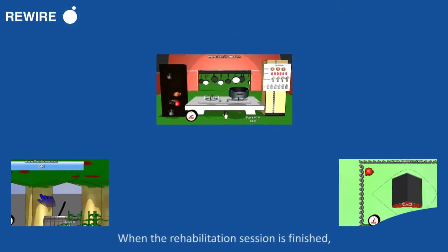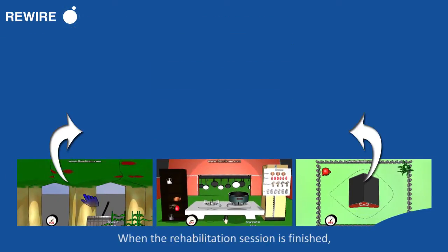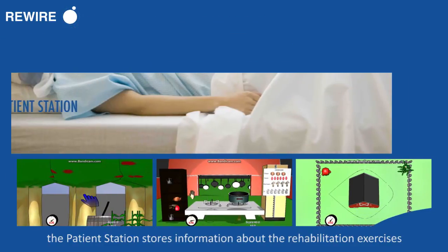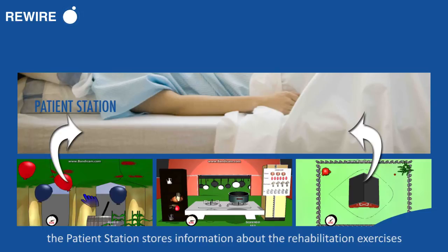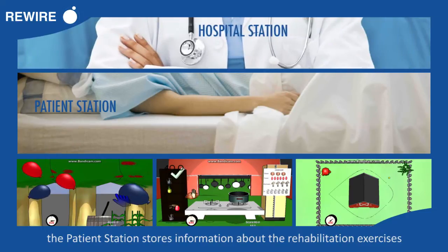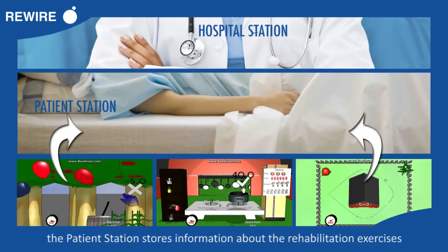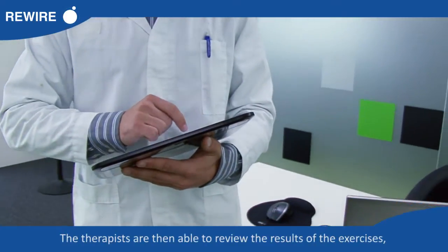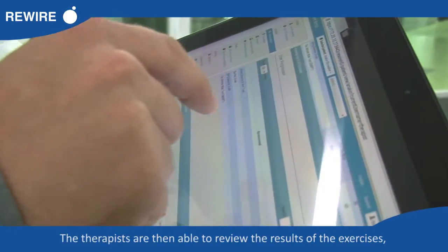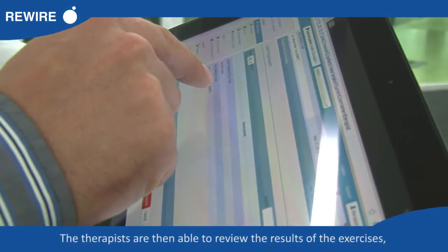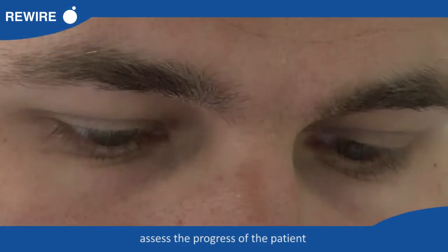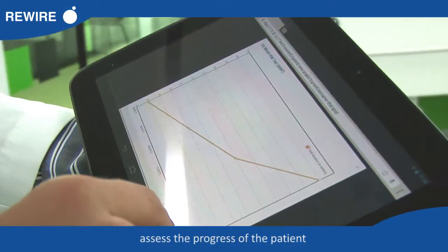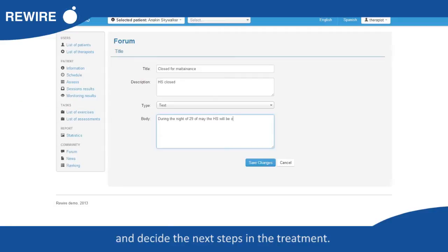When the rehabilitation session is finished, the patient station stores information about the rehabilitation exercises and sends it to the hospital station. The therapists are then able to review the results of the exercises, assess the progress of the patient, and decide the next steps in the treatment.